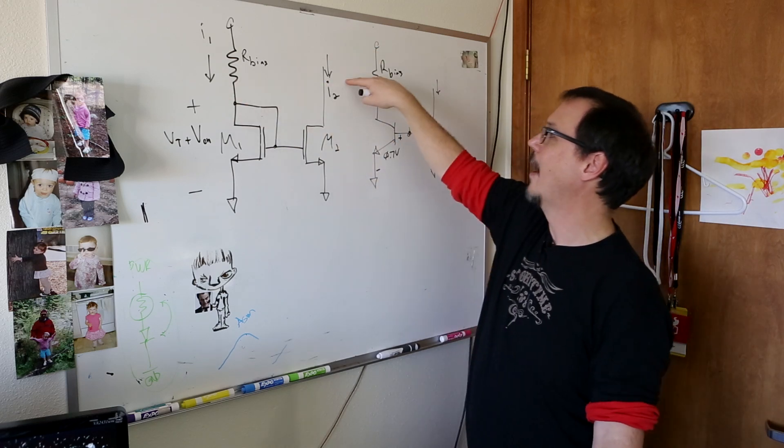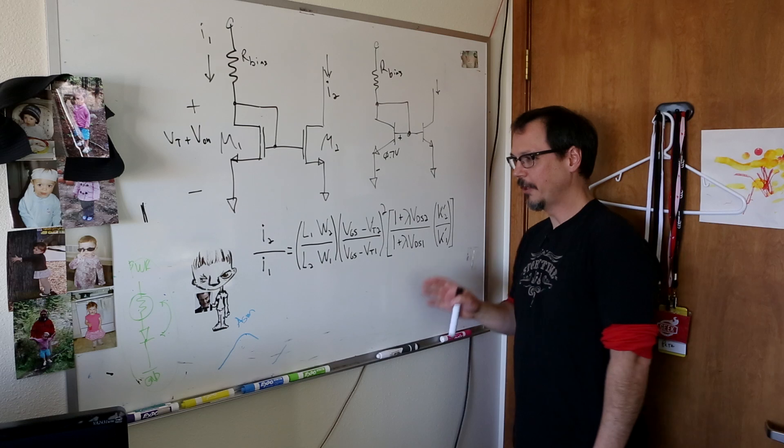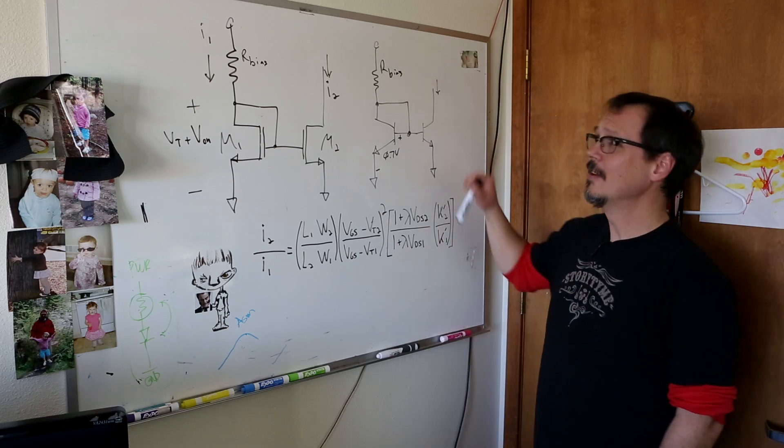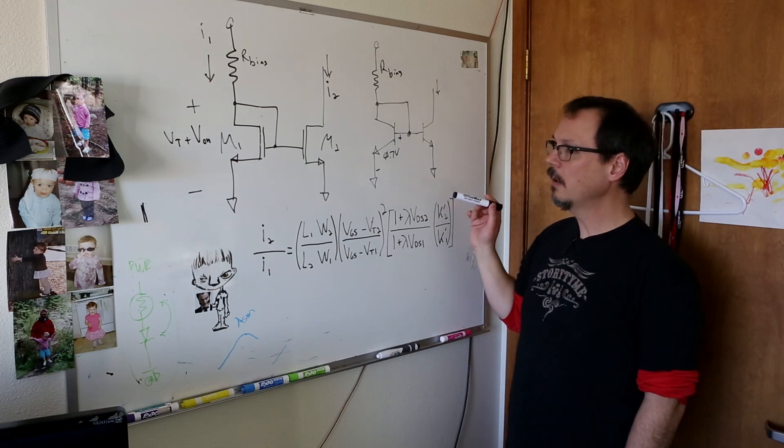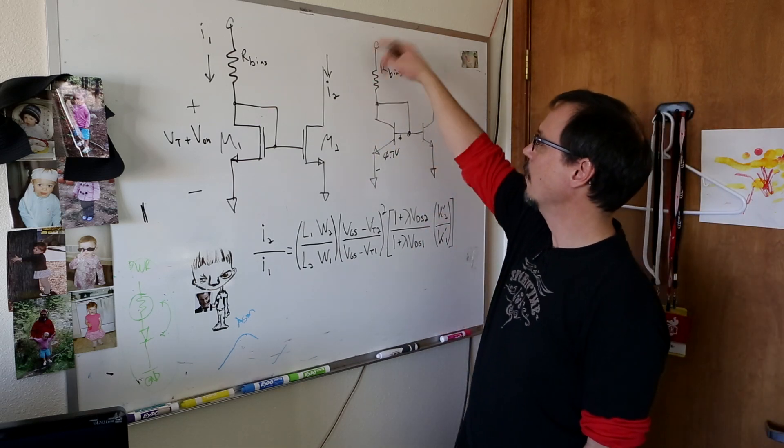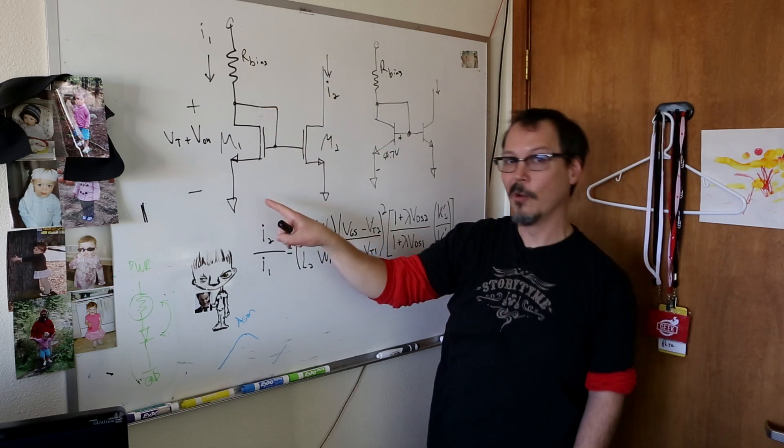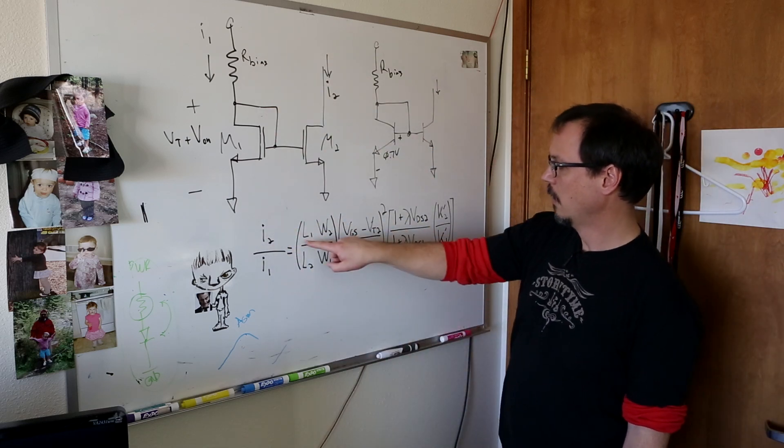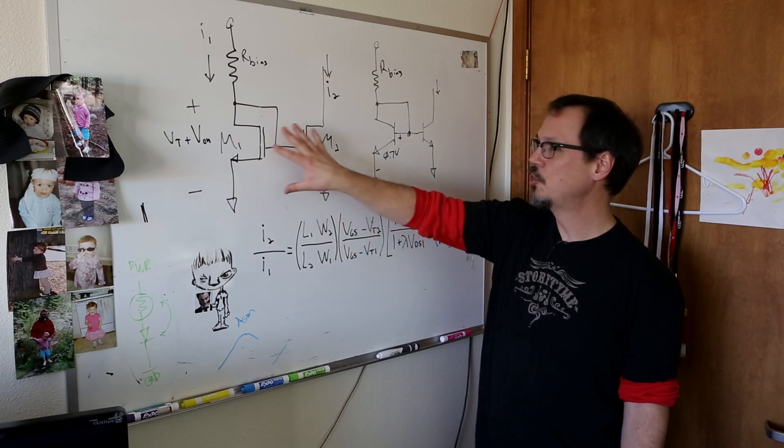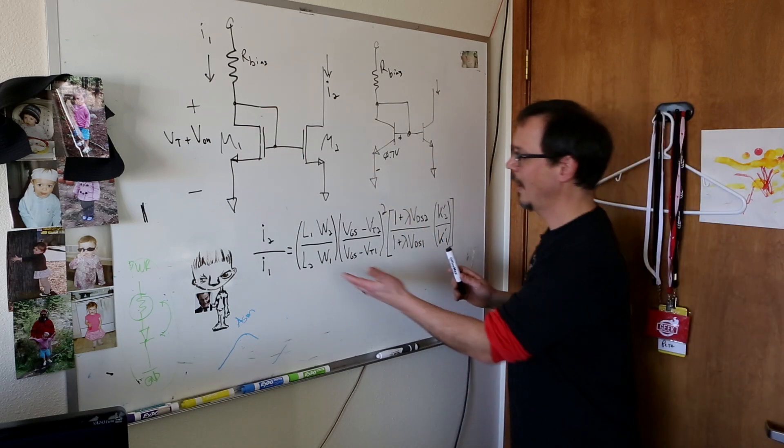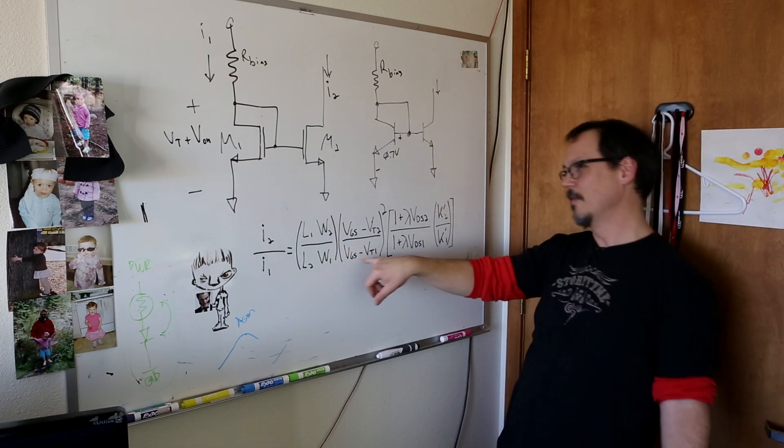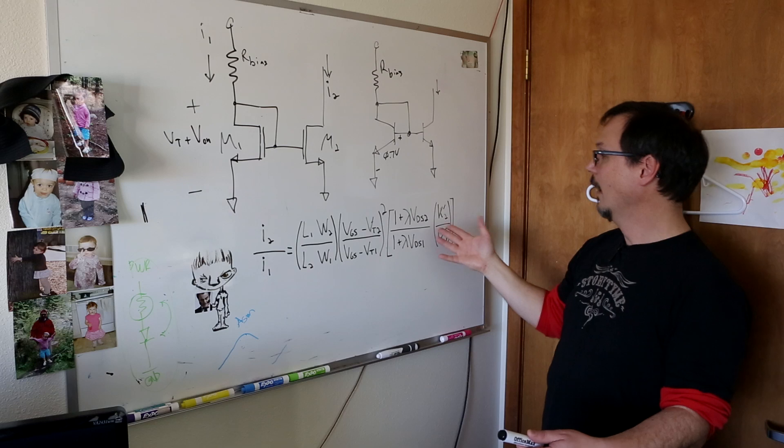You guys know that I don't like scaring people with big, long, hairy math bits. I'm not a math guy unless I have to be. But being that a current mirror is used largely in analog CMOS design, I want to show you some of the things that go into it. So the relationship of your output current I2 to your input current I1 is, generally speaking, L1W2 over L2W1. And these are the dimensions of the channels of the two devices. Times your gate to source voltage minus the threshold voltage of M2 over gate to source voltage threshold voltage minus threshold voltage of M1 squared.